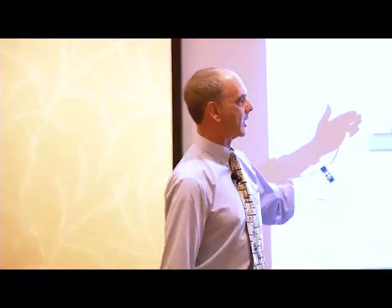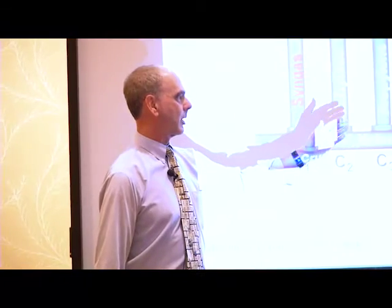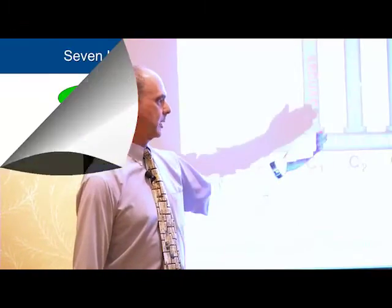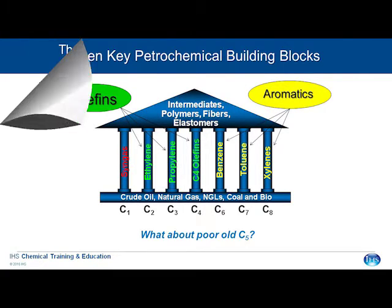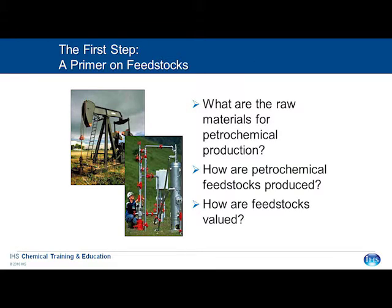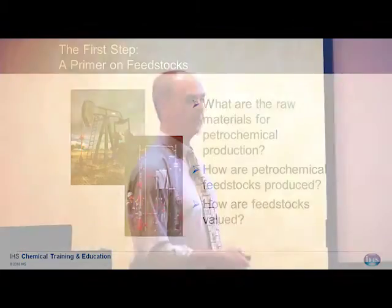And then the other side of the structure are the so-called aromatics: benzene, six carbons; toluene, seven carbons; xylenes, eight carbons. What are the raw materials for petrochemical production, how are petrochemical feedstocks produced, and most importantly, how do we value them?